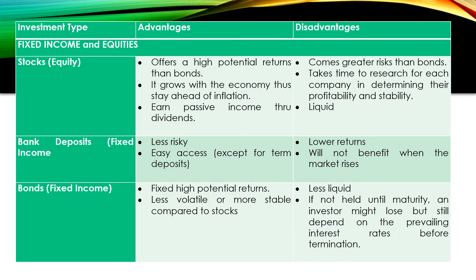For fixed income and equities, we have stocks, bank deposits, and bonds. For stocks, the advantages are: it offers higher potential returns than bonds; it grows with the economy, thus staying ahead of inflation; and it earns passive income through dividends. The disadvantages are: it comes with greater risk than bonds; it takes time to research each company to determine profitability and stability; and it is liquid.